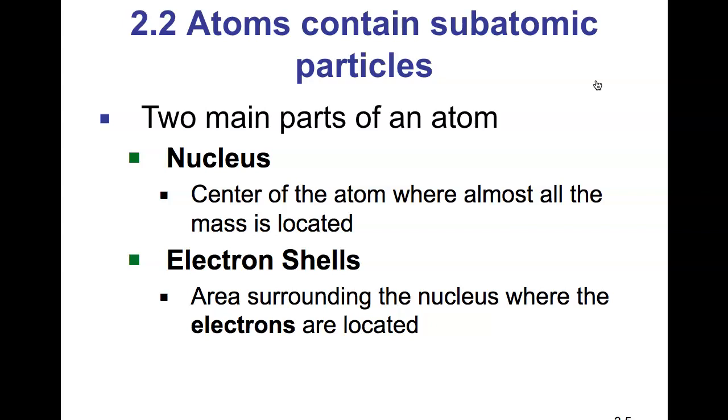Atoms contain subatomic particles. The two main parts of an atom include both the nucleus and the electron shells. The nucleus is the center of the atom where almost all the mass is located.